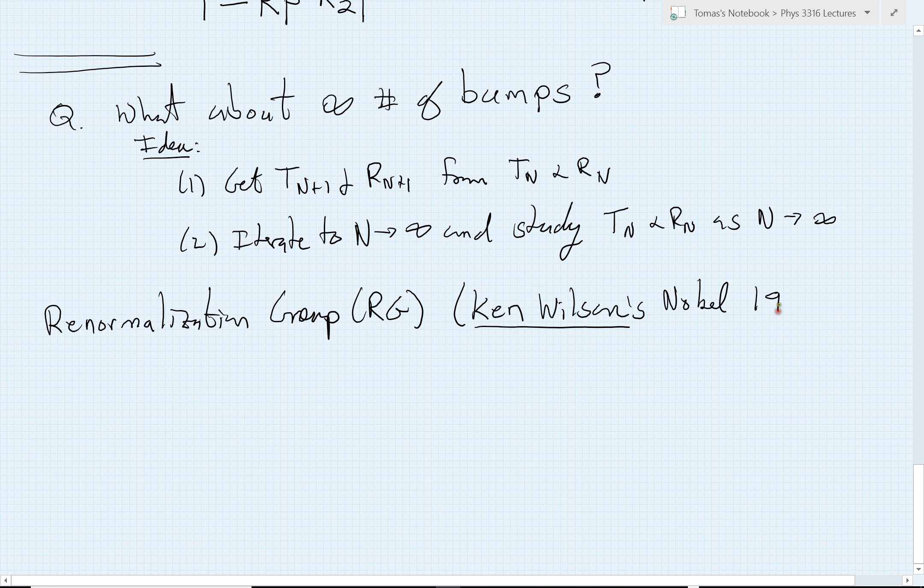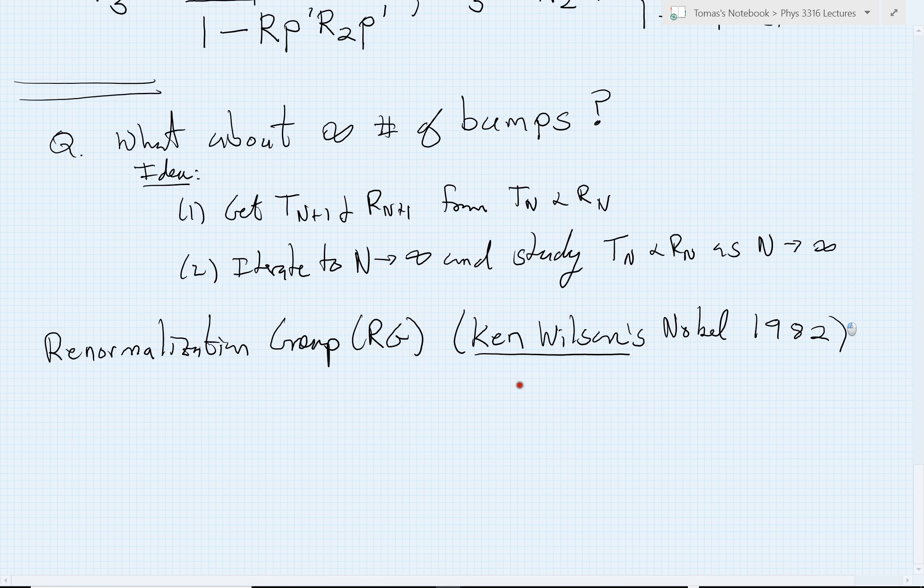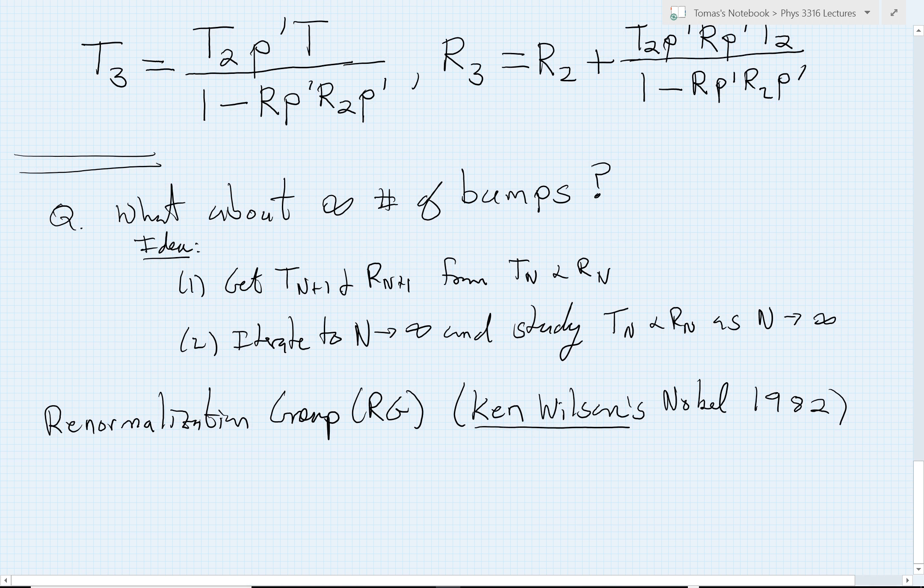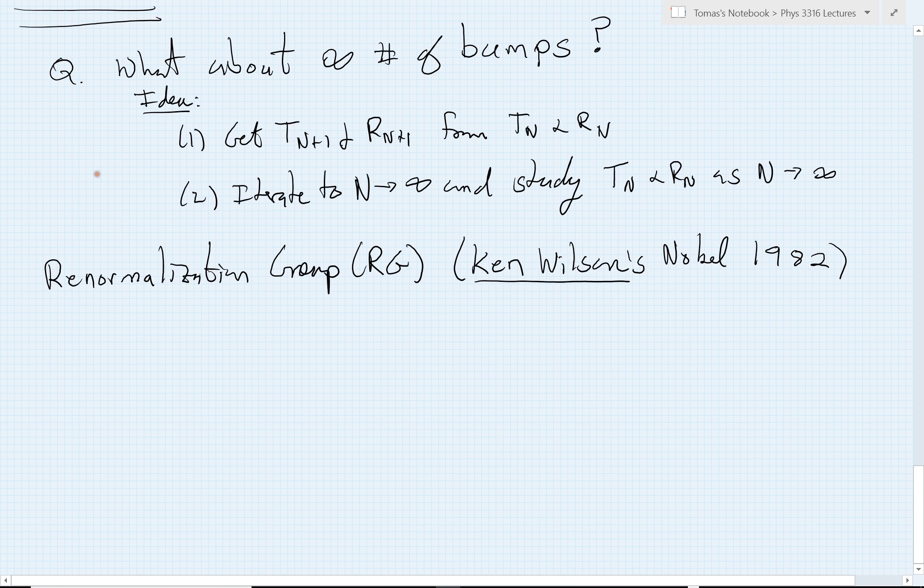So we're starting to catch up, right? Now we're only maybe 35 or 40 years behind, but we're getting there. So that's this really powerful idea. And so let's quickly get down the appropriate formulas, and then we'll learn a little bit about how we carry out these iterations. So to get T(n+1) and R(n+1) from Tn and Rn, we've essentially already shown you how to do this, right?